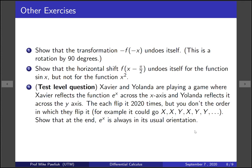Here are some other exercises for you to work on that take this concept further. Show that the transformation -f(-x) undoes itself—this is a rotation by 90 degrees actually. Show that the horizontal shift f(x - π/2) undoes itself for the function sin(x) but not for the function x². So it undoes itself for some functions but not all functions.